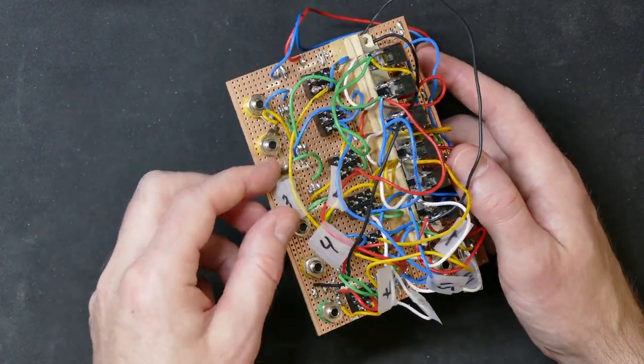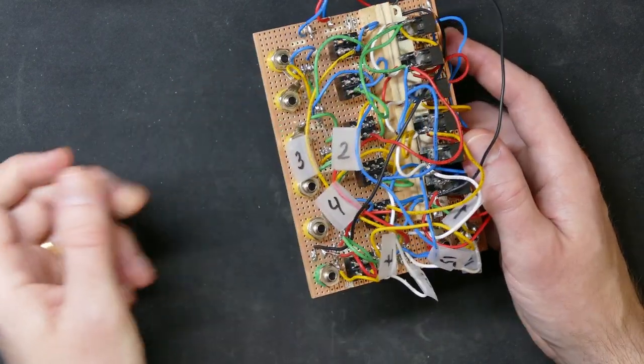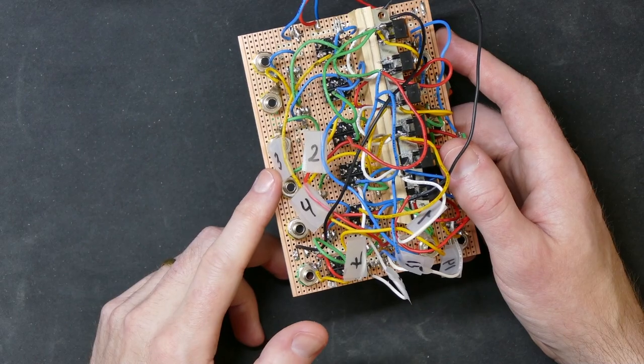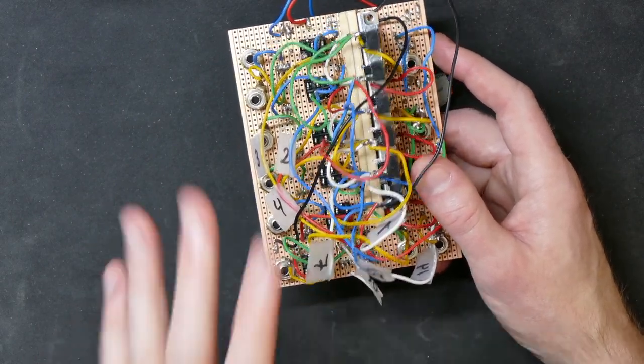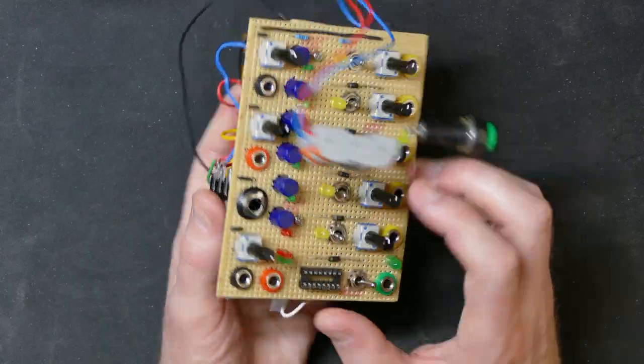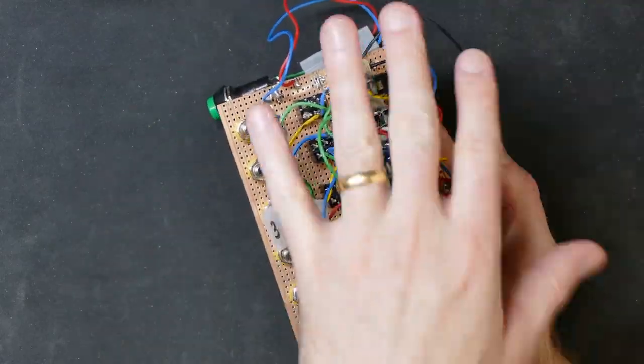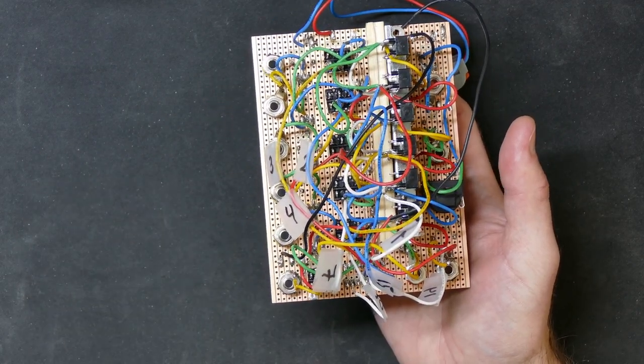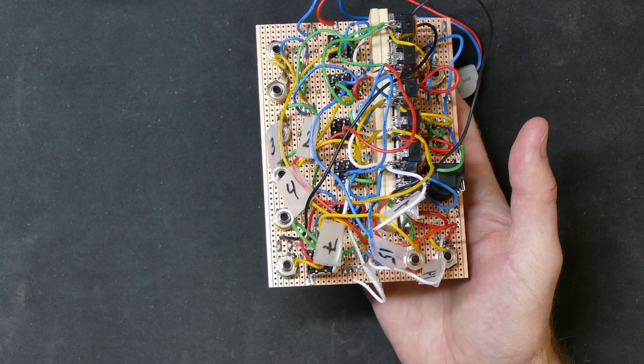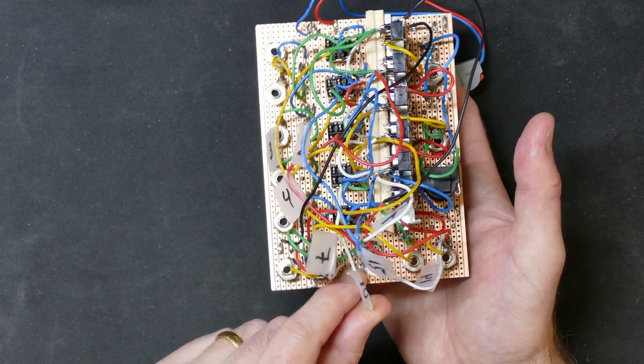You may see they have these numbered labels now on many of these wires. This is something I should have done before I started soldering to the IC socket because when you look at something from the front and you look at something from the back